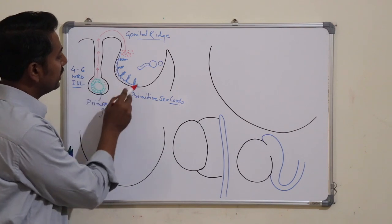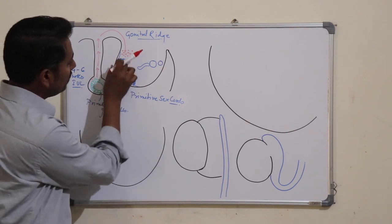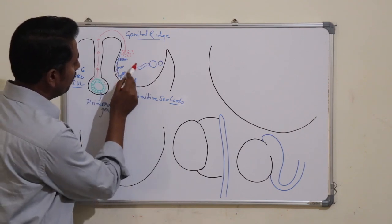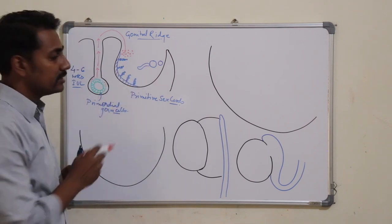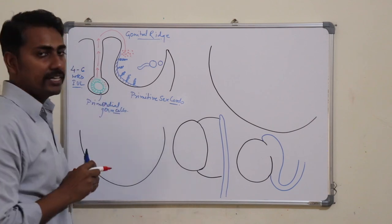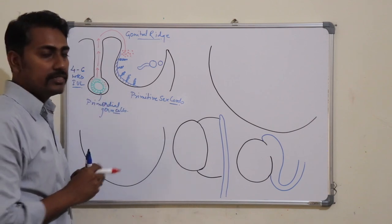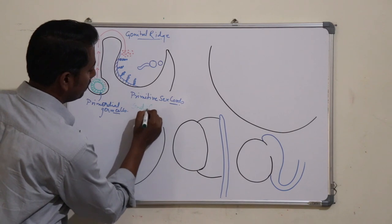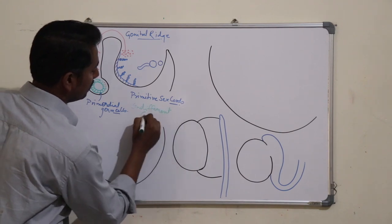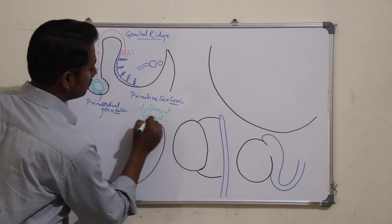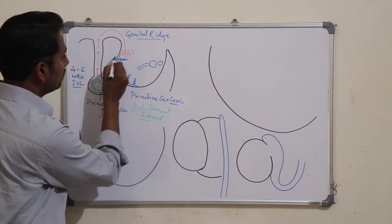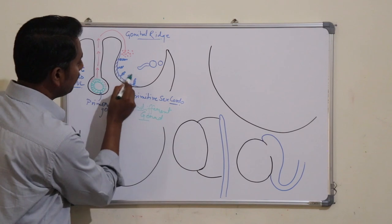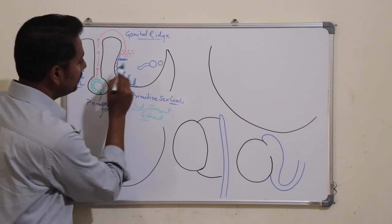In the genital region, the outer region is known as the cortex and the inner mesenchymal region is known as the medulla. At this stage of development, this developing gonad cannot be differentiated into male or female, and is therefore known as the indifferent gonad. This indifferent gonad has an outer cortex containing the primitive sex cords and an inner medulla composed of mesenchyme.